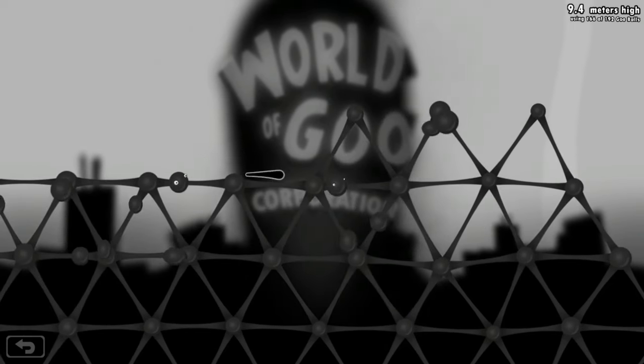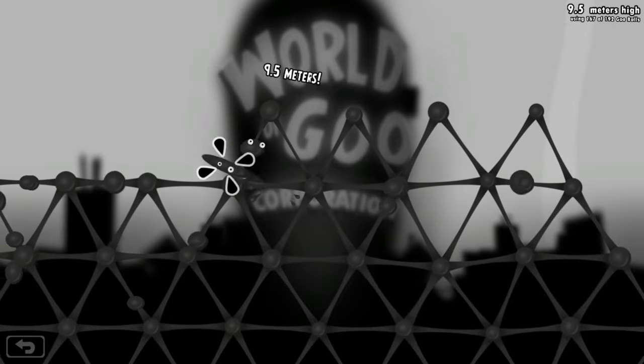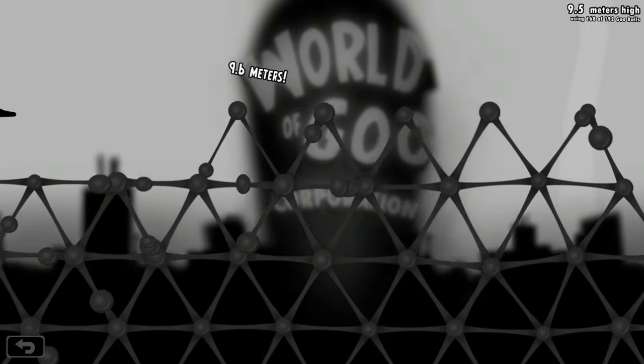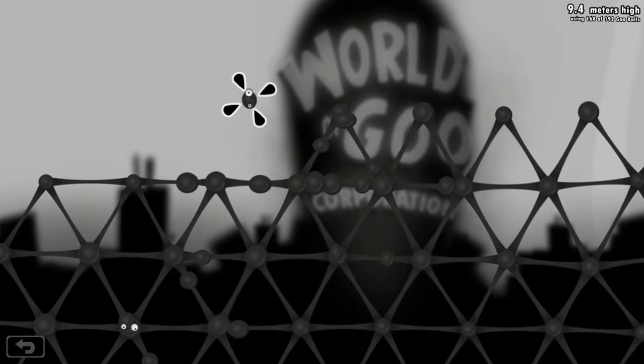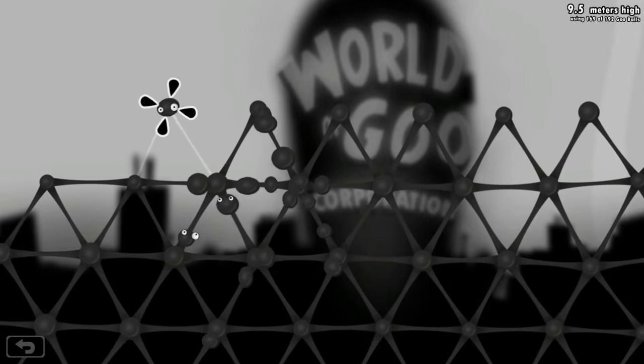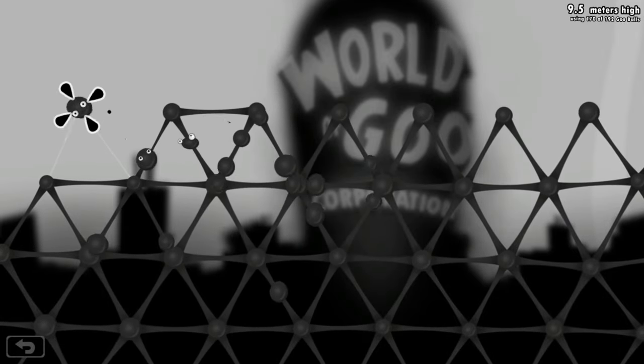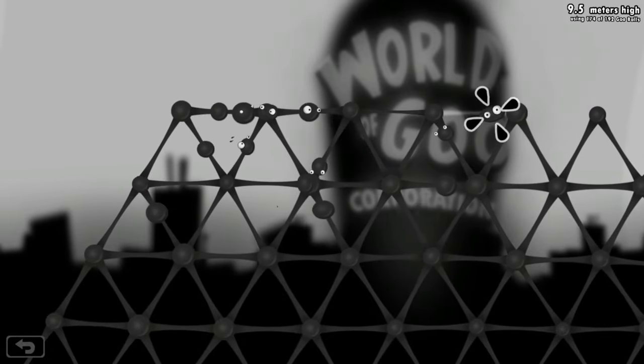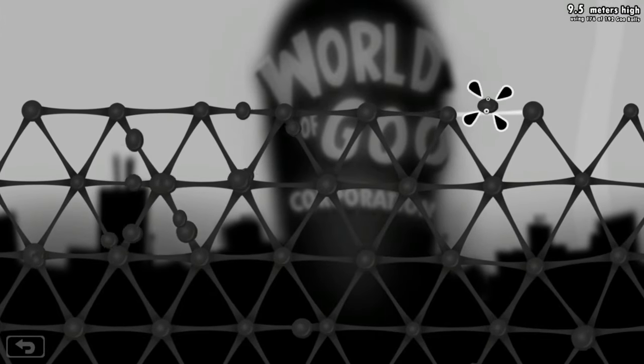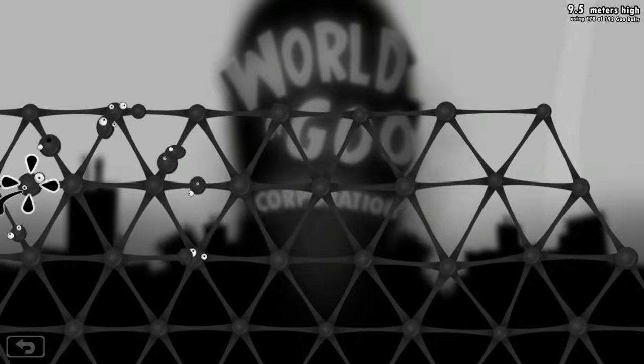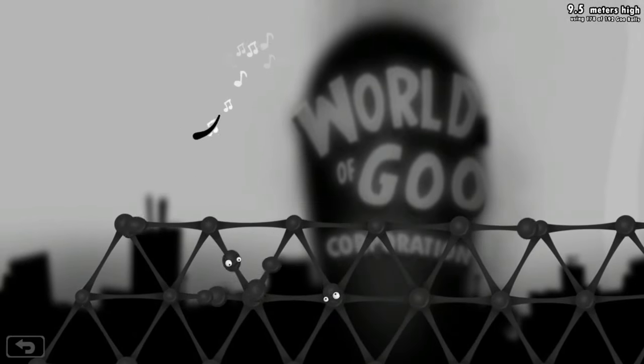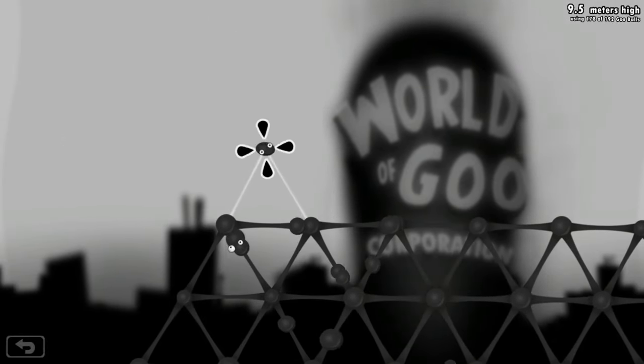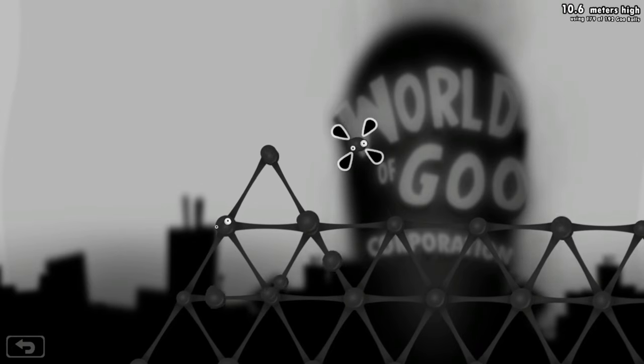One last big part of the game that I haven't really mentioned yet is the World of Goo Corporation as a location. When you beat a level you usually have to get a certain amount of goo balls to the pipe and any extra goo balls you have left over will be collected and sent to the World of Goo Corporation. Here you can use the extra goo balls to try and build a tower or structure as high as possible in any way you can. I remember playing this a lot as a kid because having hundreds of goo balls at your disposal to do just whatever you want is just so fun to see what you can come up with.